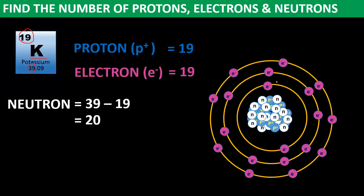To verify: first energy level has 2, second energy level has 8, and third energy level has 9. So 2 plus 8 plus 9 equals 19. That confirms we have all 19 electrons accounted for. This is how you draw the structure — electrons in energy levels, with protons and neutrons concentrated inside the nucleus.